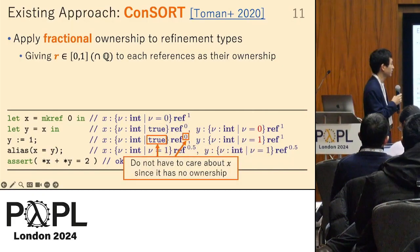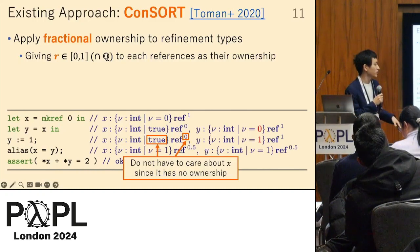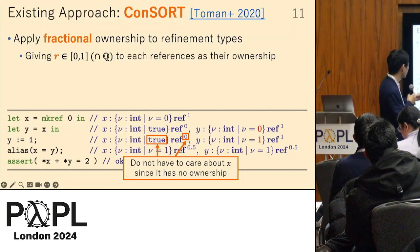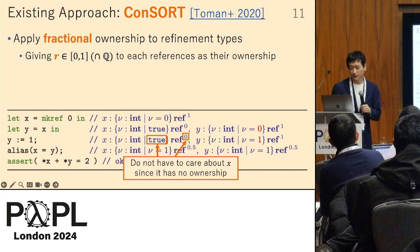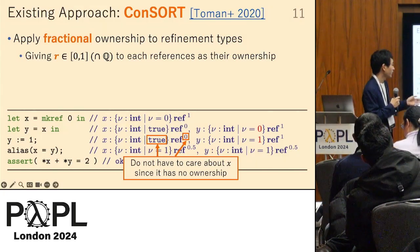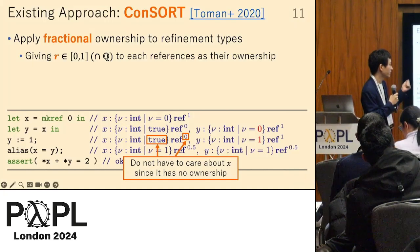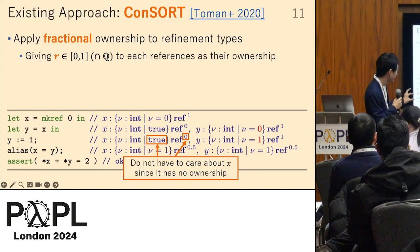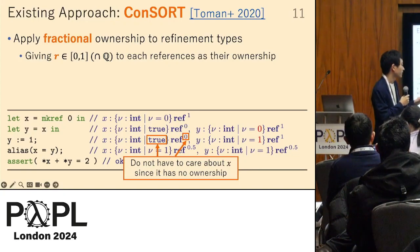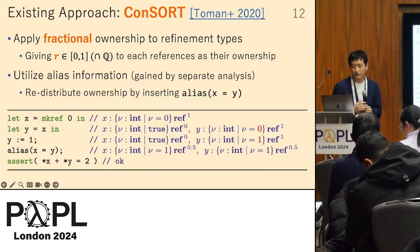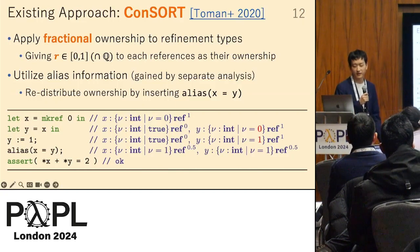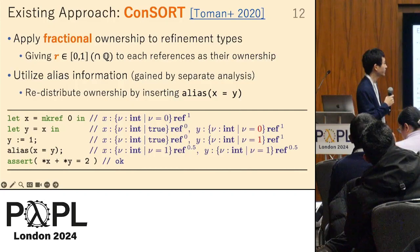Since x has no information about its content, we don't have to update the refinement of x while y is updated. However, we need to retrieve the information about the content of x to verify the last line, because it uses the content of x.